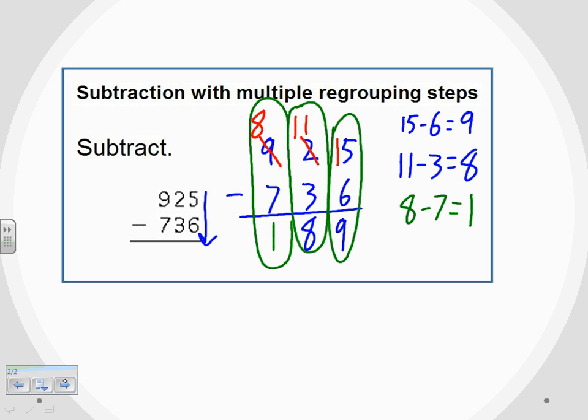Our answer is what we now have along the bottom, 189. So 925 minus 736 equals 189.